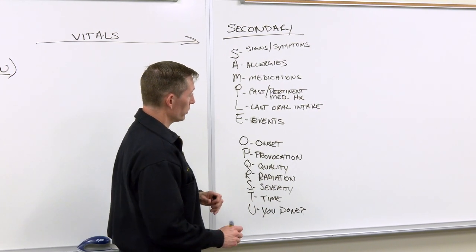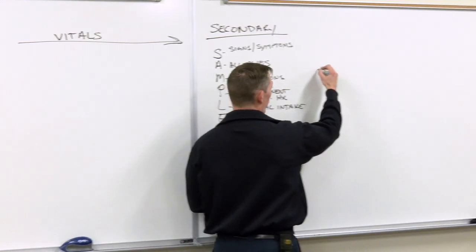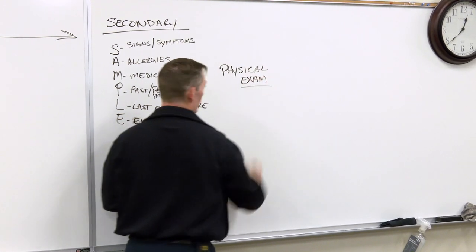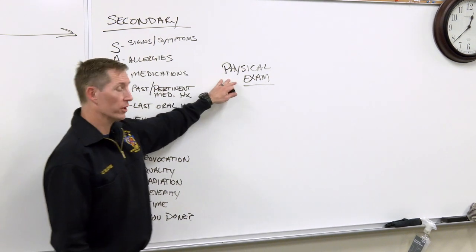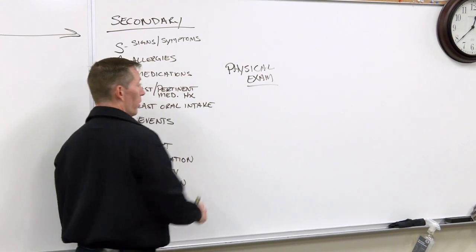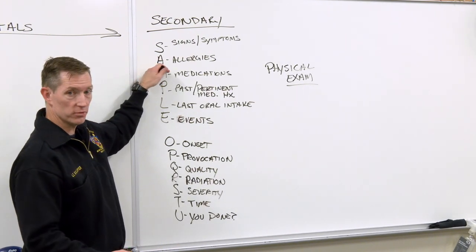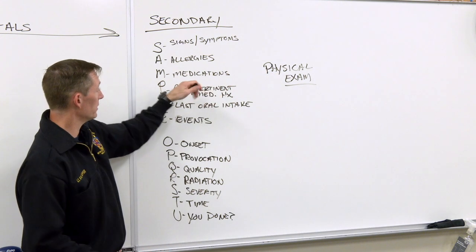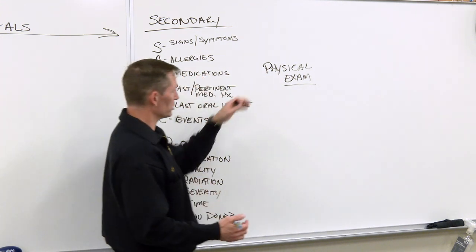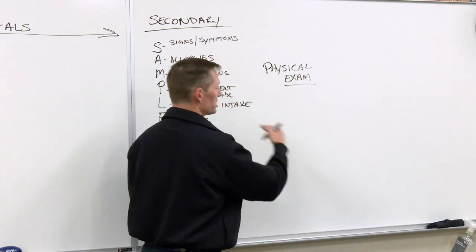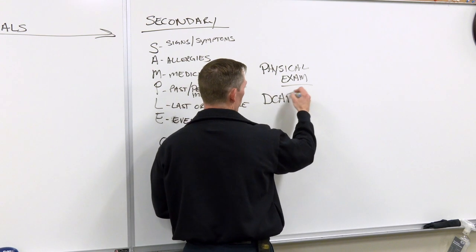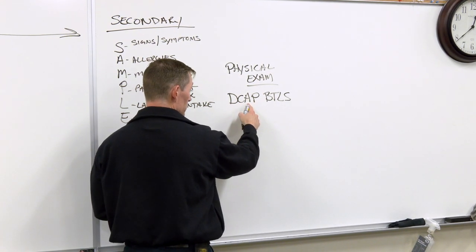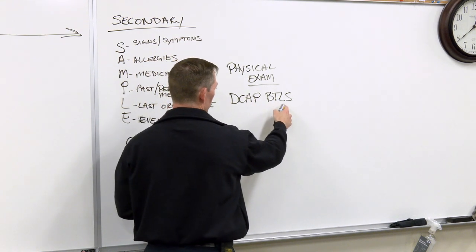The other important thing in the secondary assessment is that we must do some type of physical exam. Even for an asthma patient struggling to breathe, I still want to do a focused physical exam on the part of the body they're complaining about. I expose the chest and belly and look to make sure the patient doesn't display hives or anything like that. In any physical exam I always check for DCAP-BTLS: deformities, contusions, abrasions, punctures, penetrations, burns, tenderness, lacerations, swelling.